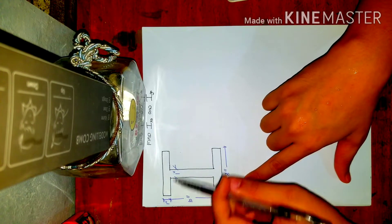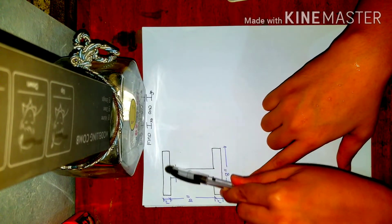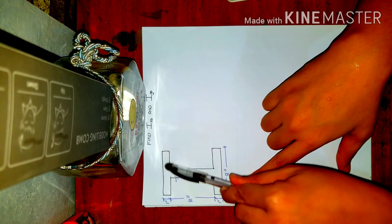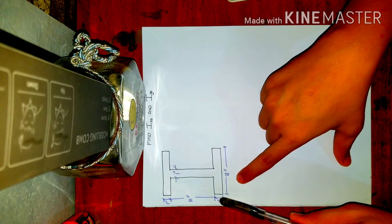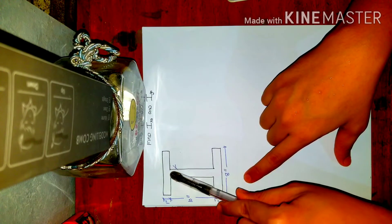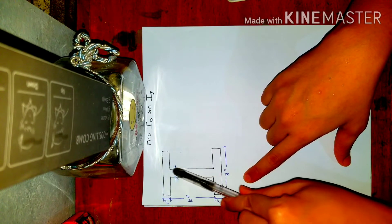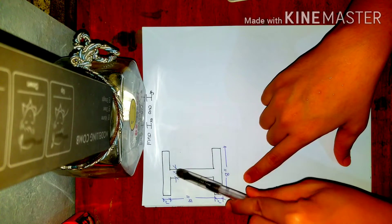So the flange here, the dimension of the flange is 8 inches by 1 inch. And the web or the middle part is 10 by 1 inches.